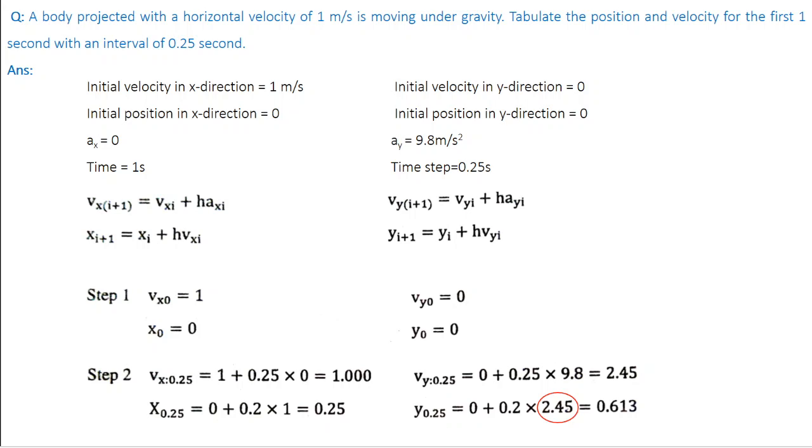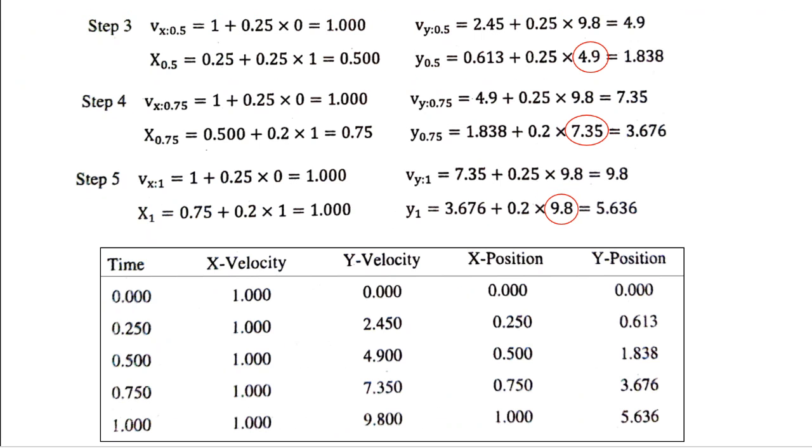In the subsequent steps, you will find that the error gets compensated. That's why we say when you decrease the step size or when you increase the number of iterations, the accuracy of the final result will be improved. Next, velocity and position at 0.5 seconds. Just repeat the same thing. And here also, if you look at the y position, the same error is repeated. Instead of taking the velocity in the previous step, the velocity in the current step is considered. You need to make the change and calculate the correct value.